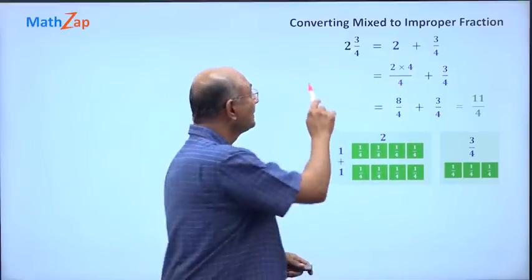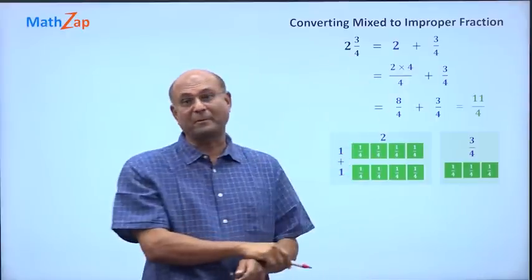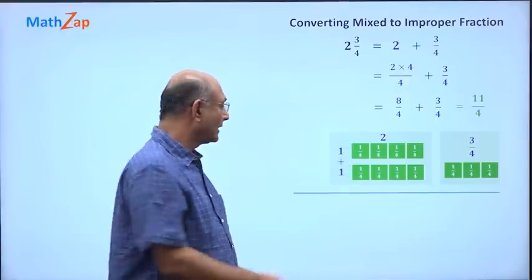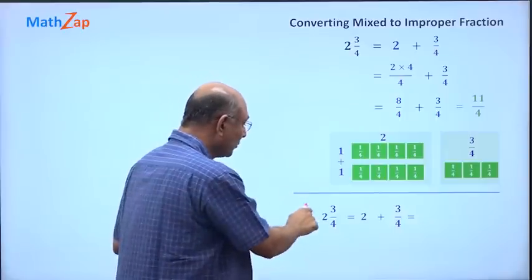So 2 and 3 by 4 is the same as 11 by 4. It is a very long way to convert from mixed to improper fraction, so we need a shortcut and that's what I'm going to show you.